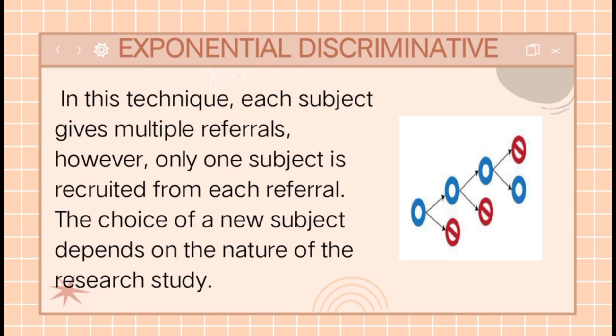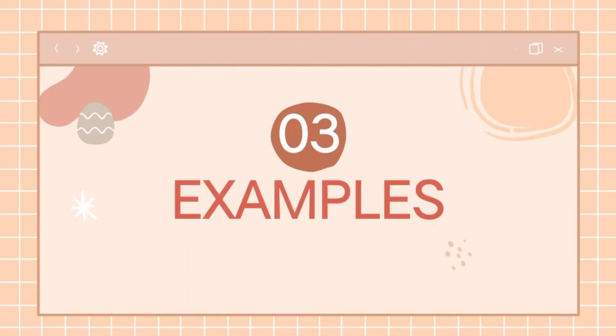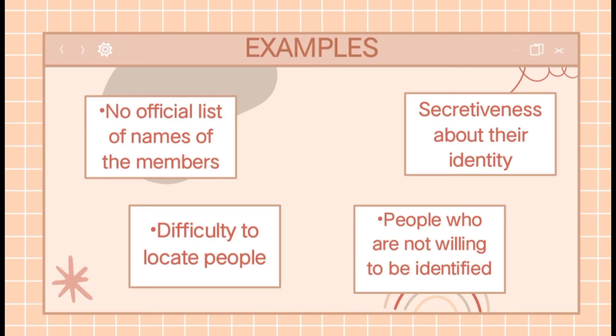Snowball Sampling is the only way of collecting data and meaningful information in certain scenarios. For example, there is no official list of names of certain group members.